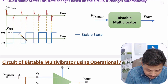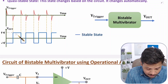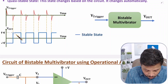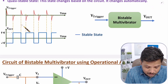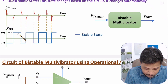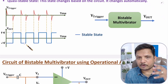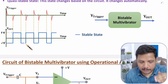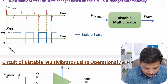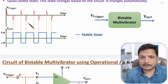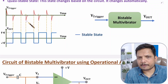If you have output of plus V voltage, then to have transition from plus V to minus V, we need to give a positive trigger pulse. Based on trigger pulse only, state will change; otherwise, output stays constant. To change output from plus V voltage to minus V voltage, we need to give a positive trigger. And to change state from minus V to plus V, we need to give a negative trigger pulse. That is how bistable multivibrator functions.